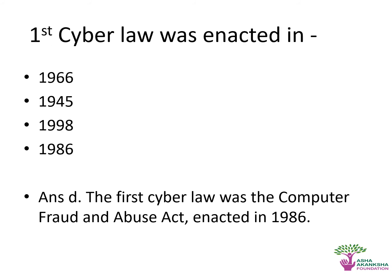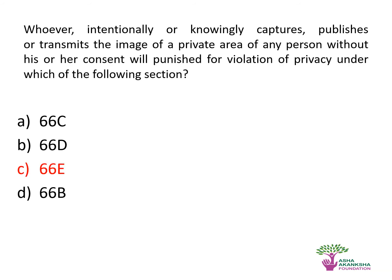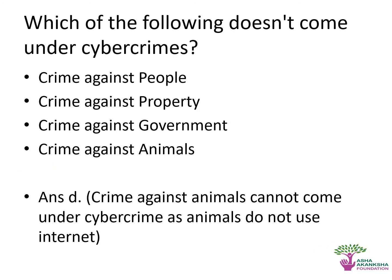The first cyber law was enacted in 1986. Whoever intentionally or knowingly captures, publishes, or transmits the image of a private area of a person without his or her consent will be punished for violation of privacy under which section? The correct answer is Section 66E.